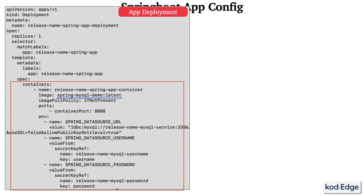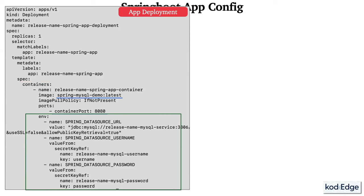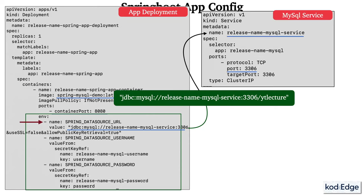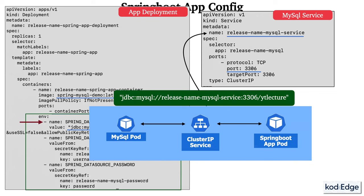For the Spring Boot application deployment configuration, we define the container section with our image name pulled from the local system. We set the container port, then the environment section for database connection configuration. The first config is the Spring datasource URL, which includes the service name, port, and database name. We use the same MySQL service name and port we already configured. The Spring Boot application will connect to the ClusterIP service, which then connects to the MySQL pod.